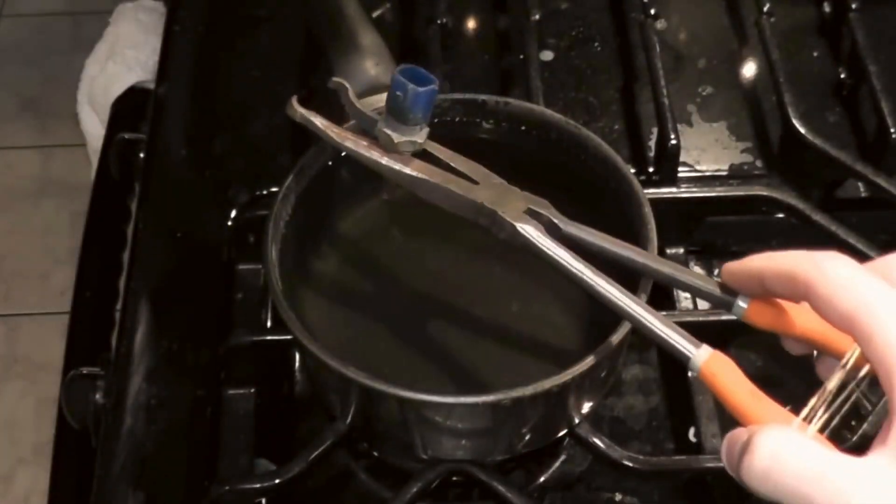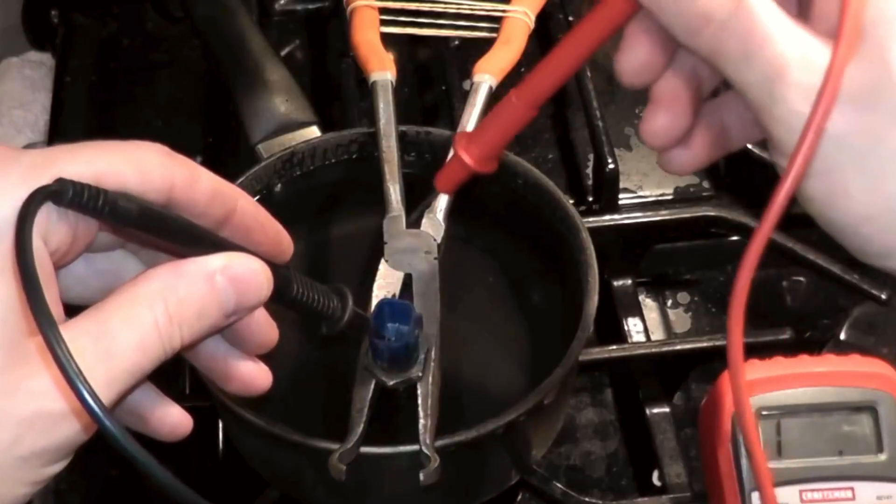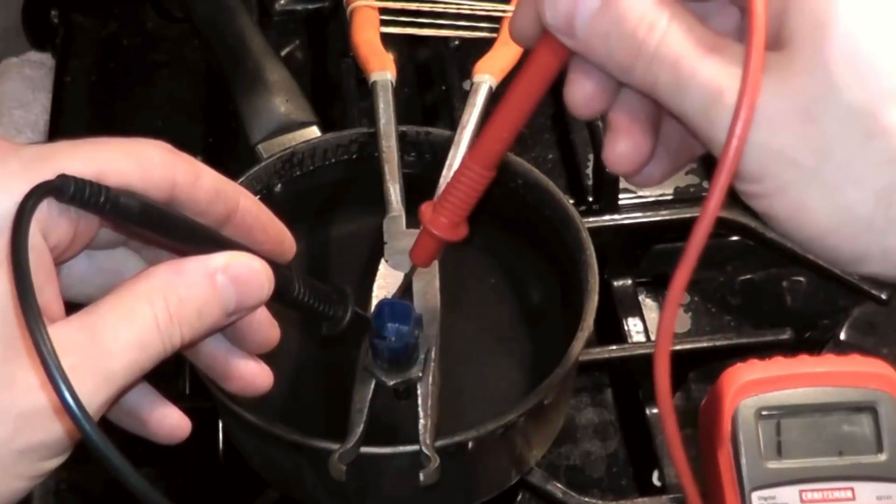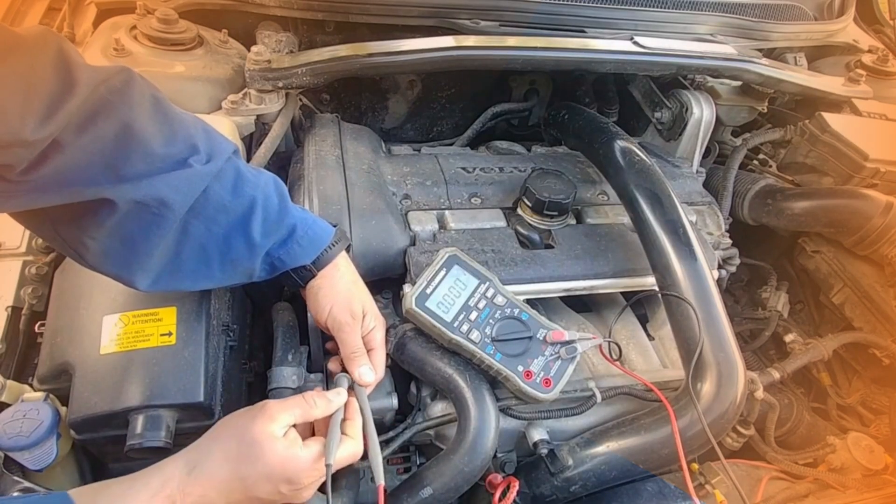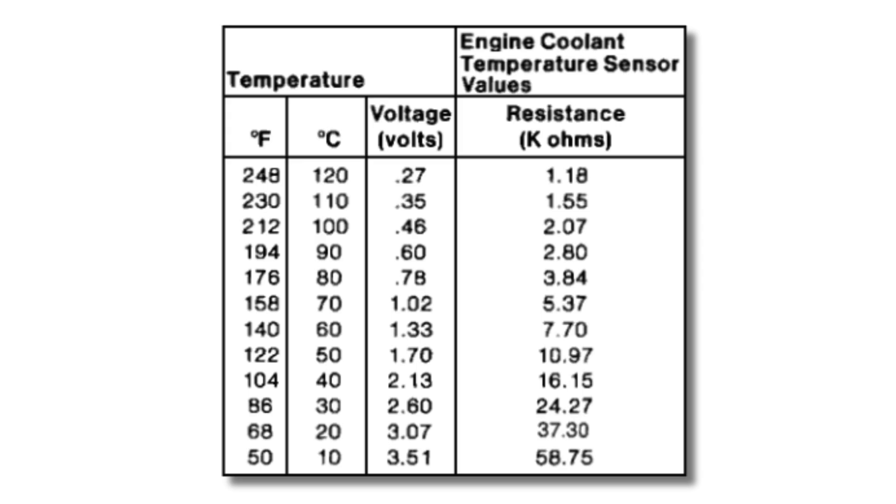To test the ECT sensor, put it in hot and cold water and measure its resistance at different temperatures using a multimeter. Also, make sure to verify that the sensor ground and reference voltage are correct. Compare those resistance values to the specifications in your service manual.